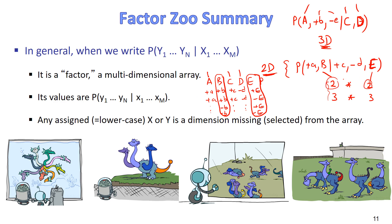We ran out of time, but insha'Allah next time, given that we now understand what we mean by factors, we'll go through inference by enumeration to see its problem, then variable elimination as a more efficient method of doing inference in BayesNet. Assalamu alaikum.